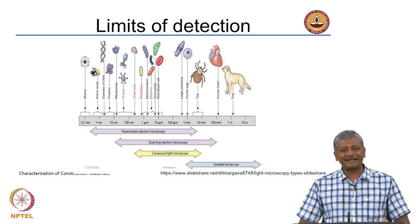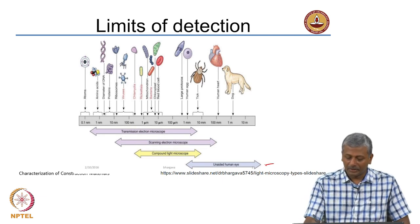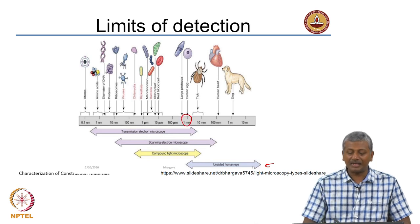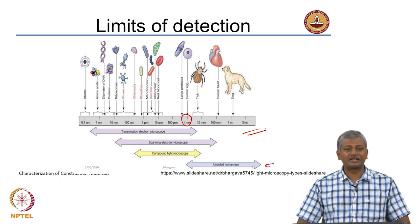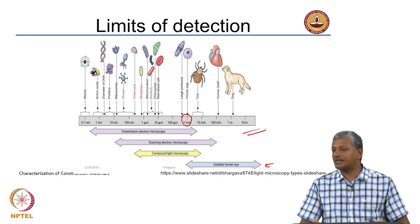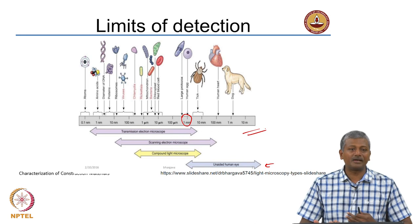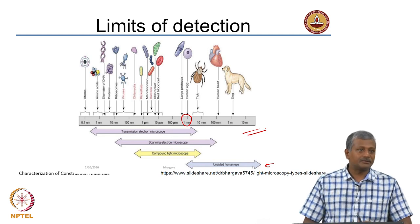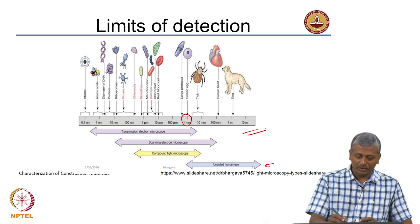Everything has a limit of detection — you cannot use any technique to detect anything you want. For the unaided human eye, the scale of detection ranges from less than 1 millimeter upward; larger objects are easier to see. There is also a sight distance beyond which you cannot see. When you need to go slightly further in resolution, you move to the light microscope.